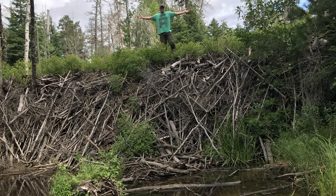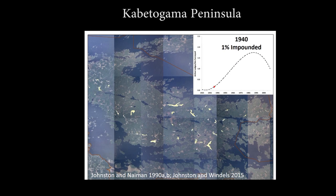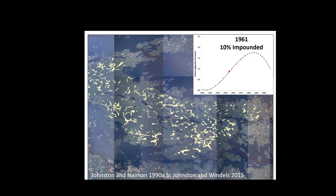There was a woman named Carol Johnston who started doing some work here in the 80s, and she did this creative thing where she looked at a historical set of aerial photos taken starting in about 1940, roughly every 10 years. The time between photos got narrower as she got closer to 1990, but over that 50-year span she could map where the beaver ponds were, because even on those old grainy photos you could still see the outline of a beaver pond.